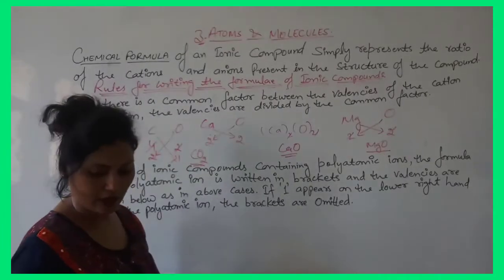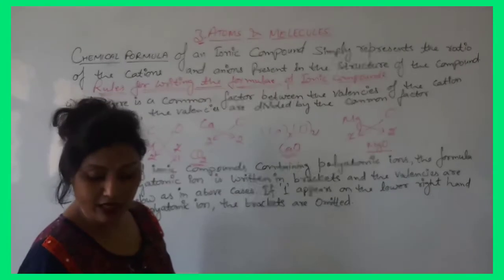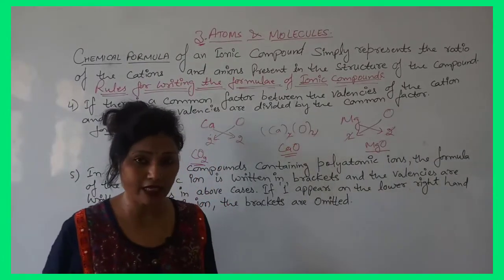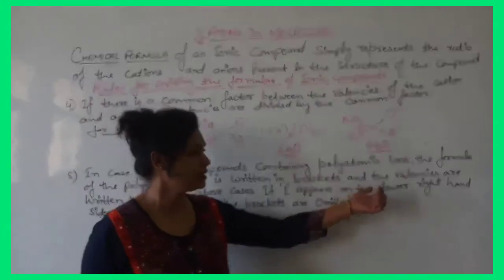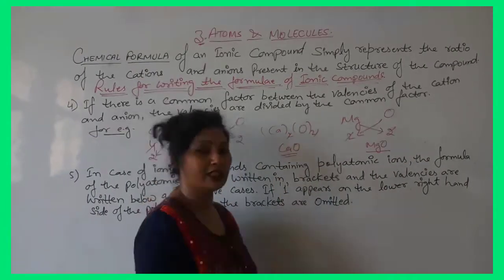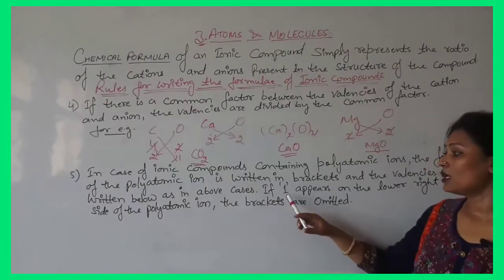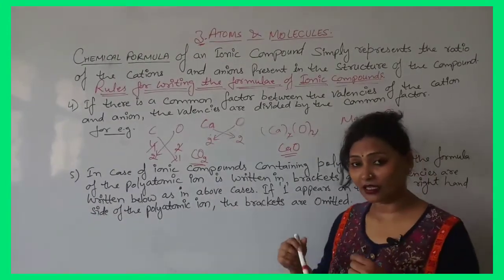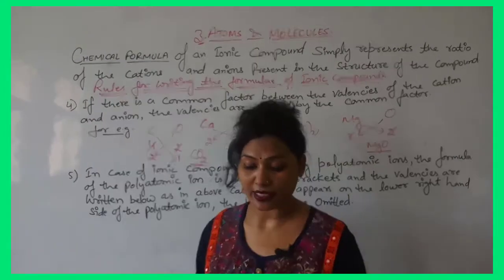Next case: ionic compounds containing polyatomic ions. Polyatomic ions are groups of atoms which carry a charge. The formula of the polyatomic ion is written in brackets, and the valencies are written below as subscripts — just as in the cases above. If the subscript on the right-hand side is 1, the brackets are omitted; otherwise, the brackets remain.